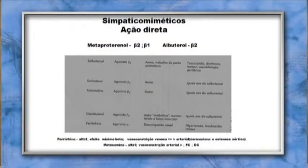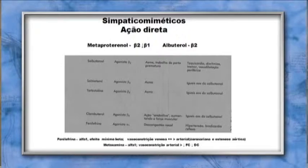Entre os simpaticomiméticos de ação direta sobre receptores beta-2: salbutamol, salmeterol, terbutalina, clenbuterol e fenilefrina. A fenilefrina e a metoxamina são utilizadas no controle da hipotensão decorrente do bloqueio simpático. A fenilefrina tem efeito alfa-1, efeito mínimo alfa-beta, causa constrição venosa maior que arterial, podendo ser usada com segurança em pacientes coronariopatas e com estenose aórtica. A metoxamina é principalmente alfa-1, com maior vasoconstrição arterial, causando diminuição da frequência cardíaca e do débito cardíaco.